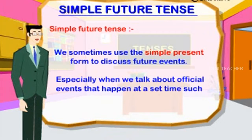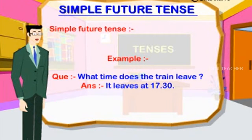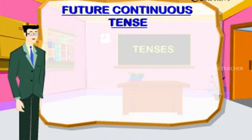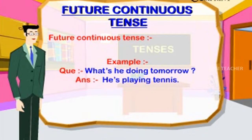Simple Future Tense: sometimes expressed using the simple present form, especially for official events like timetables, meetings, and programs. Example: 'What time does the train leave?' — 'It leaves at 17:30.' The present continuous tense is also used for certain future agreements or plans. Example: 'What's he doing tomorrow?' — 'He is playing tennis.'